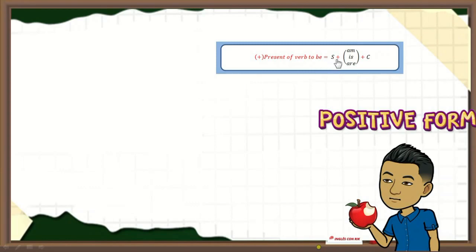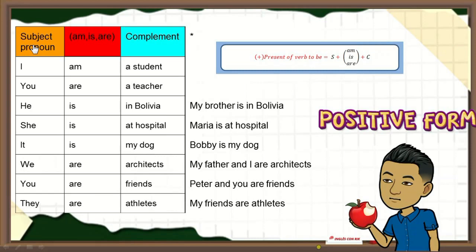We are going to continue with the positive form. We have to write first the subject, plus am, is, or are, plus complement. For example: I am a student — yo soy un estudiante. You are a teacher — tú eres un profesor. He is in Bolivia — él está en Bolivia. She is at hospital — ella está en el hospital. It is my dog. We are architects — nosotros somos arquitectos. You are friends — ustedes son amigos. They are athletes — ellos son atletas.